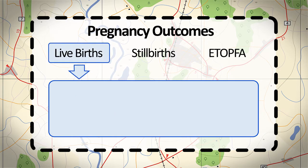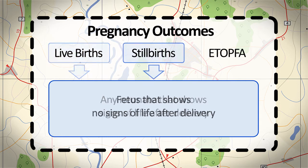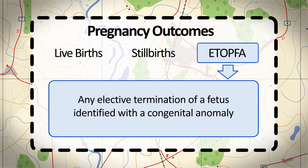A live birth is any neonate, regardless of gestational age, that shows any signs of life after delivery. A stillbirth is a fetus that shows no sign of life after delivery. An elective termination of pregnancy for fetal anomaly is any elective termination of a fetus identified with a congenital anomaly.